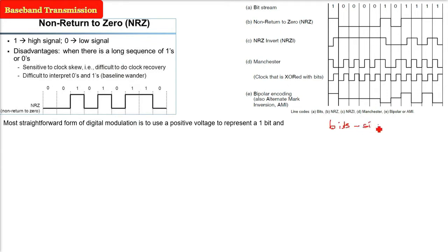The most straightforward form of digital modulation, that is from bits to signals, is simply to say positive voltage as 1 bit, or a negative voltage as a 0 bit. We can represent a positive voltage by 1 bit and a negative voltage by a 0 bit. This is the most easiest way.